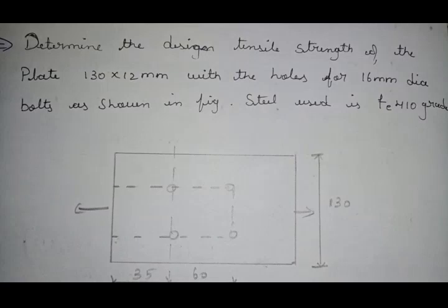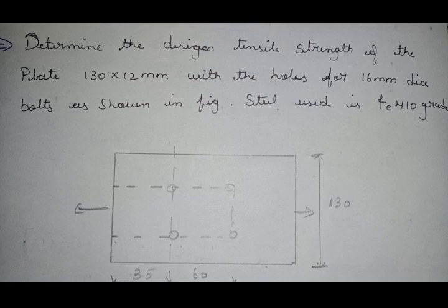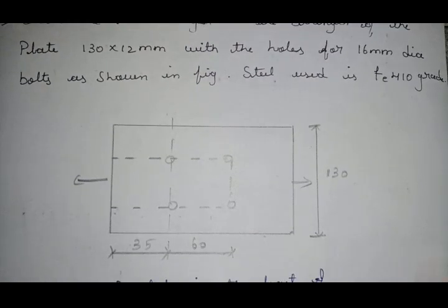We'll discuss the design of tension members. The problem is to determine the design tensile strength of a plate 130 by 12 mm with holes for 16 mm diameter bolts as shown in the figure. Steel used is Fe410 grade. You need to determine the design tensile strength — the plate has a width of 130 mm and thickness of 12 mm.